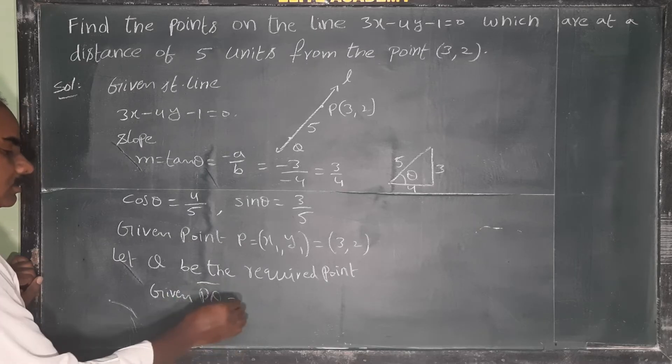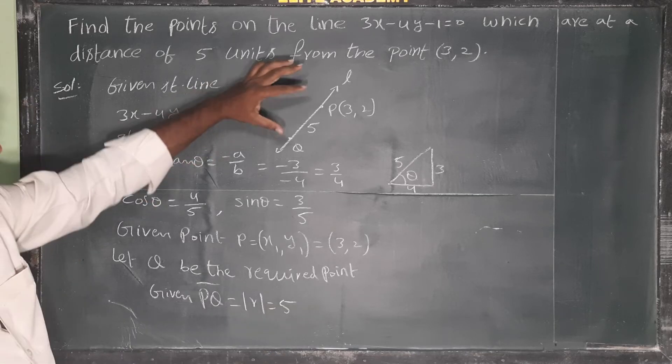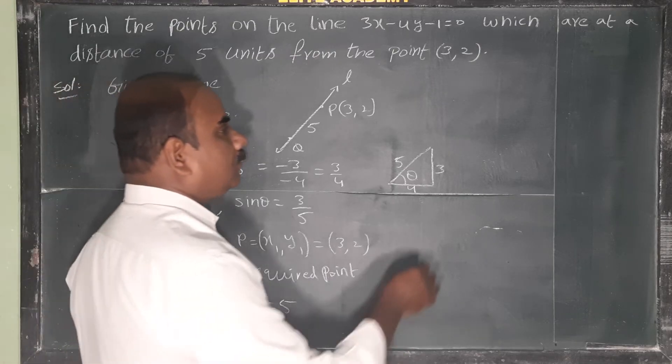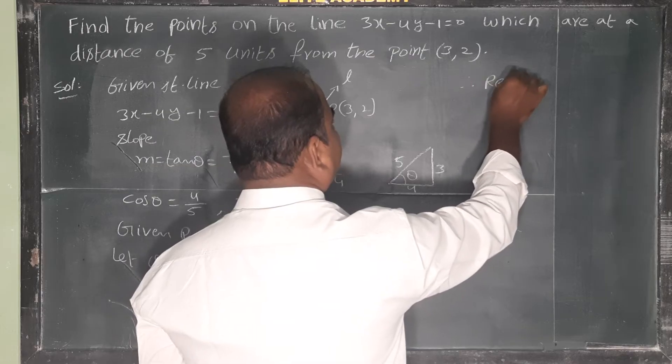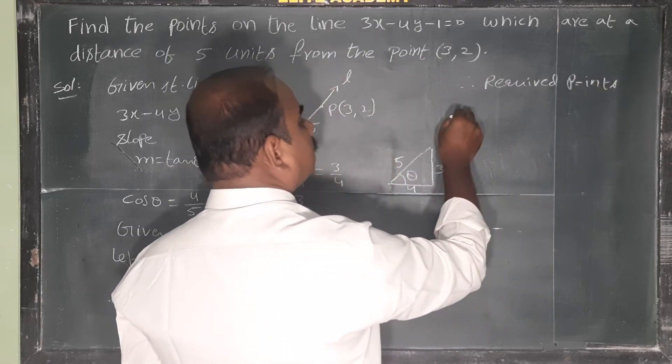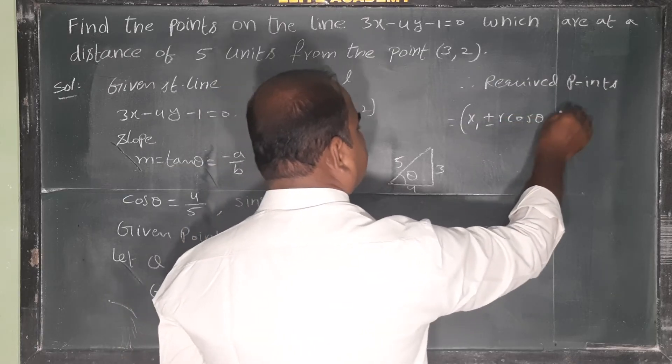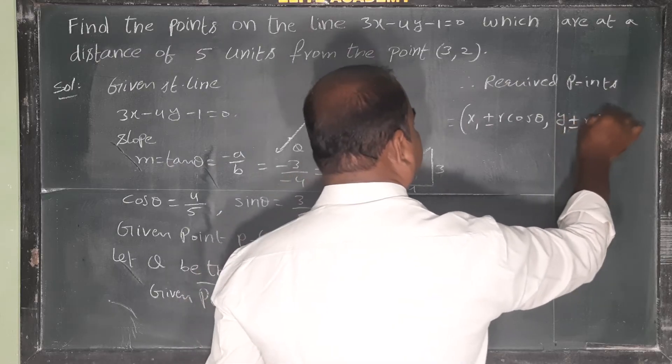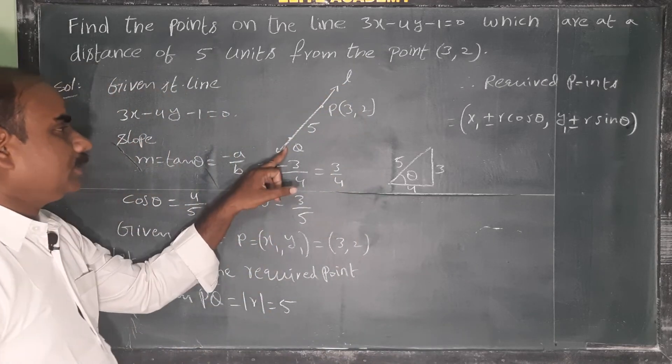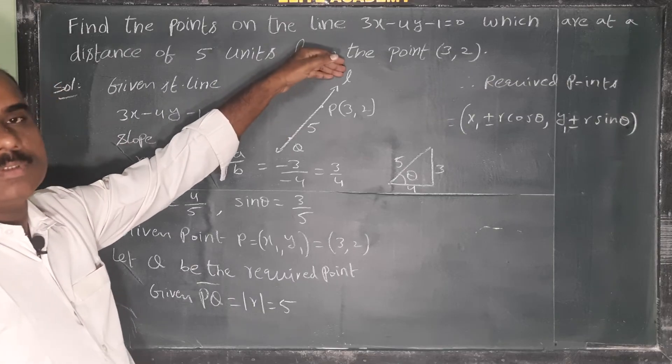Q be the required point. Given distance between P and Q, that is equal to mod r equals 5 units. So PQ distance is 5. If we want to find point Q, we use the formula. Therefore, required points equals (x₁ plus or minus r cos theta, y₁ plus or minus r sin theta).